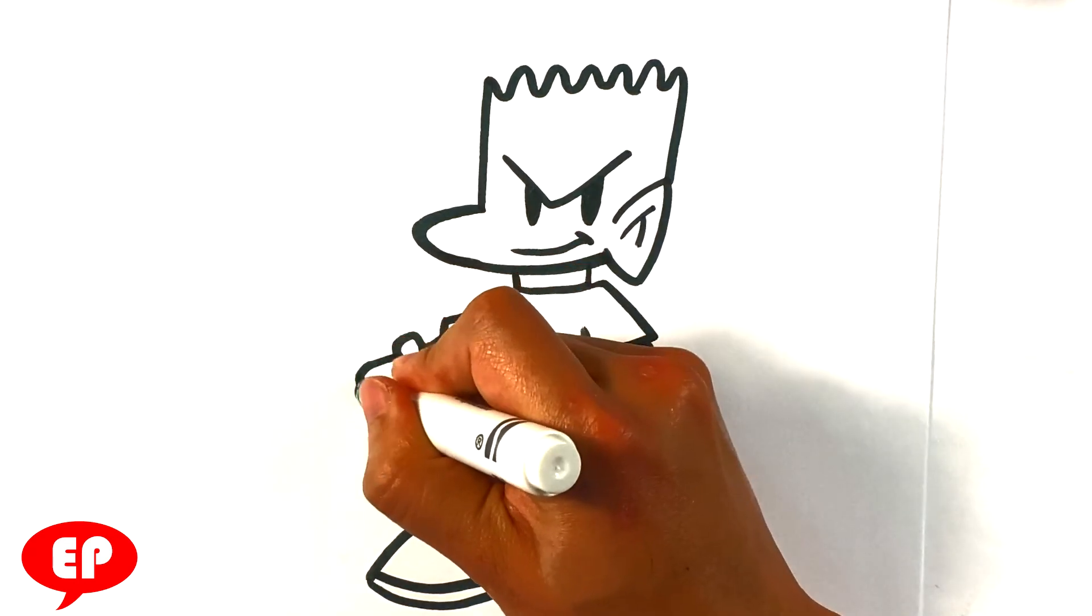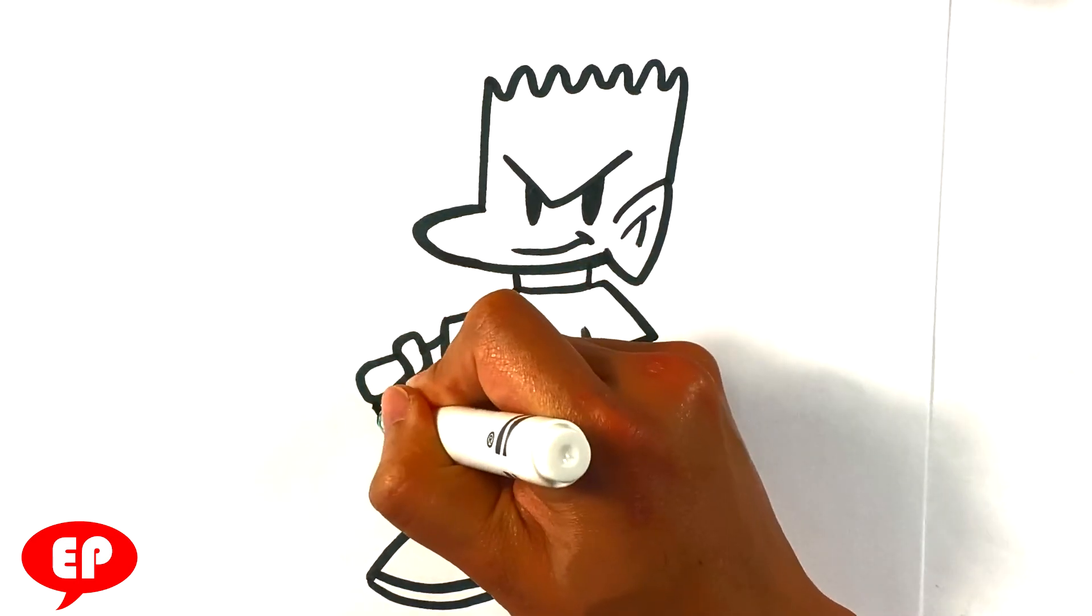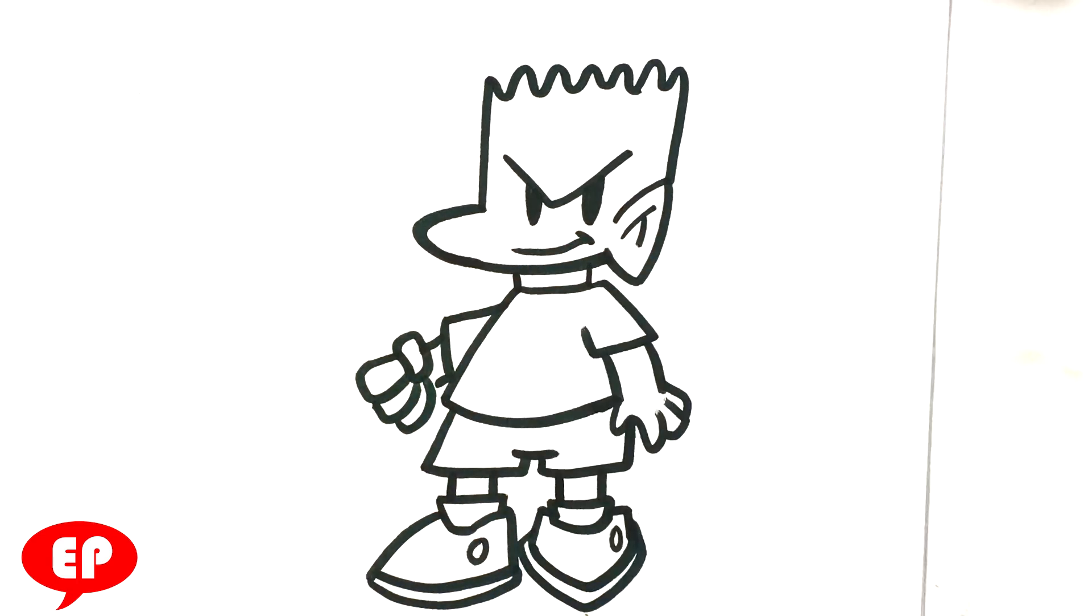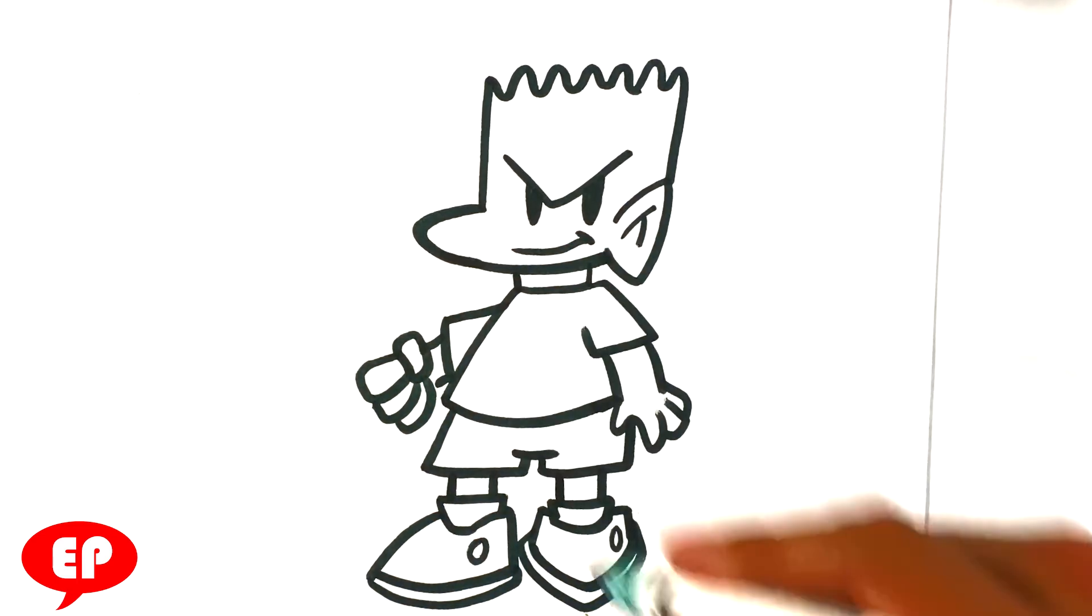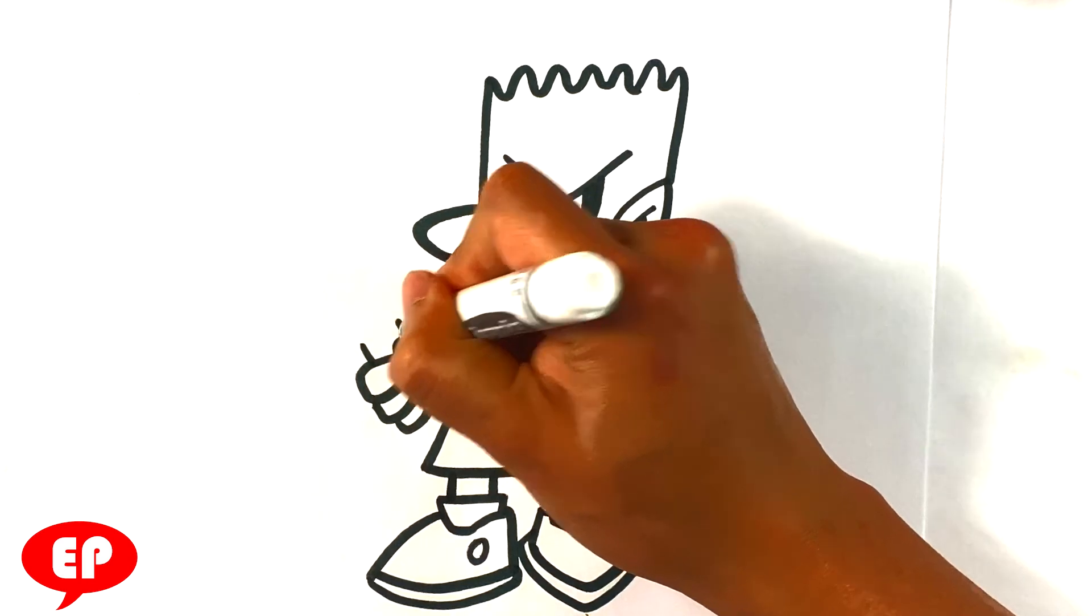Then you're gonna have thumb. Knuckle. Area. And draw that microphone. Line over here. Line over here.